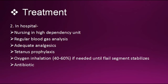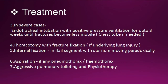In hospital: nursing in a high dependency unit, regular blood gas analysis, adequate analgesics, tetanus prophylaxis, and oxygen inhalation at 40–60% if needed until the flail segment stabilizes. Antibiotics should also be given. In severe cases, endotracheal intubation with positive pressure ventilation for up to 3 weeks until fractures become less mobile. Chest tube if needed. Thoracotomy with fracture fixation if there is underlying lung injury, and internal fixation in a flail segment with the sternum moving paradoxically.